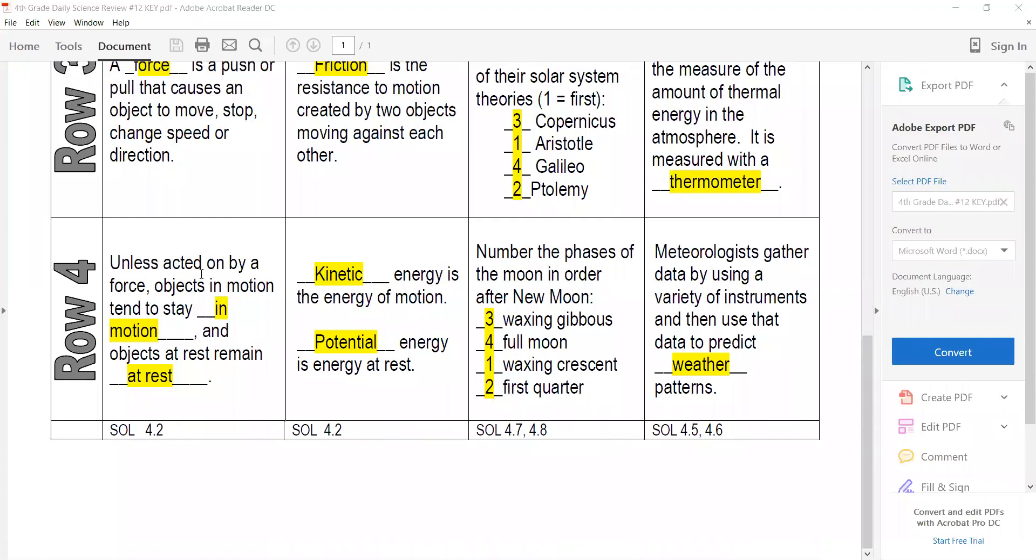We need to know this phrase: unless acted upon by a force, objects in motion tend to stay in motion, objects at rest remain at rest. Kinetic energy is the energy of motion. Potential is the energy of rest.